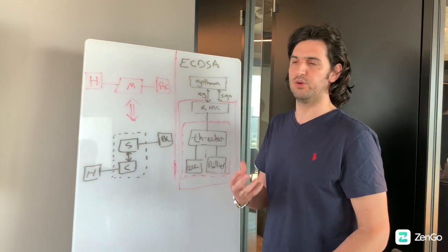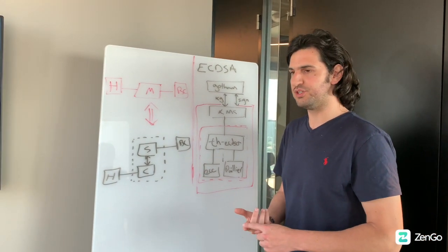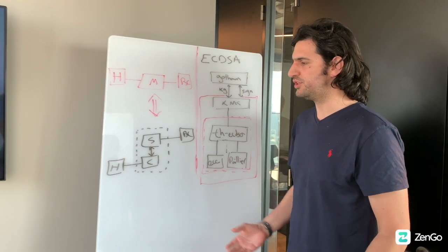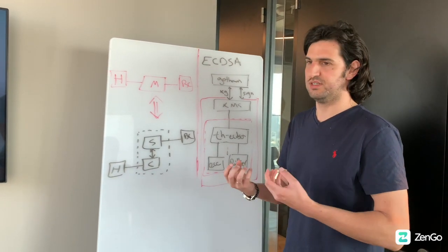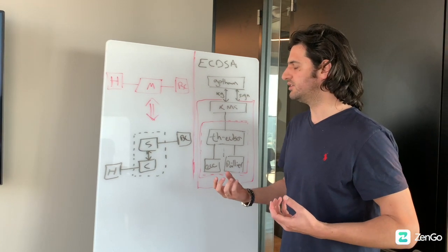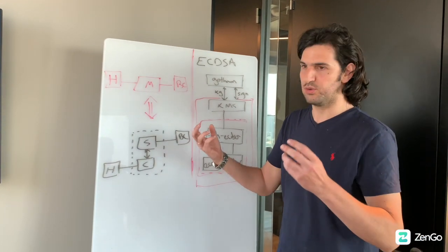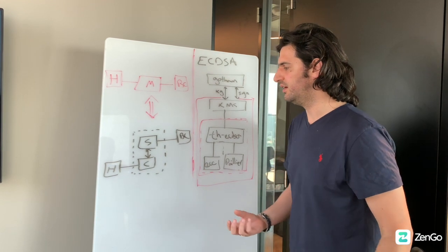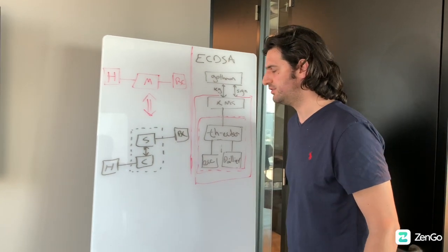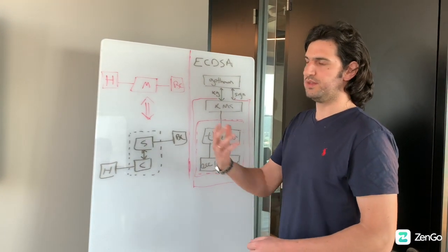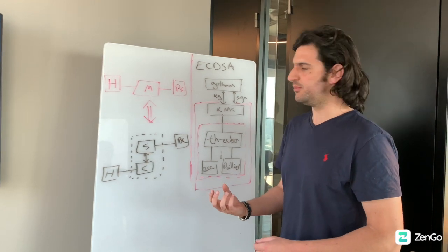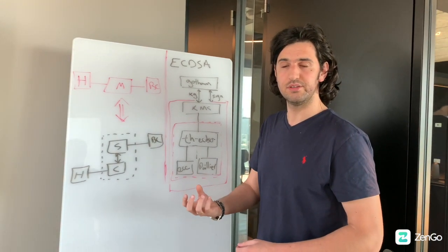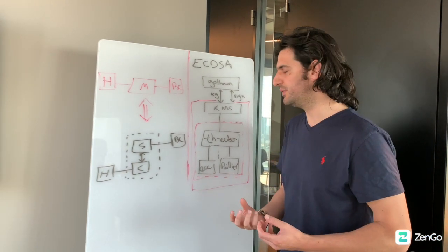This is what's called secure computation, and in our case the computation is key generation and digital signature. The client and the server will generate a key in a distributed way such that one part, or secret share of the key, lies in the client and one in the server. Afterwards, when the human provides the necessary input, the client and server will be able to generate a signature together without exposing their secret information.